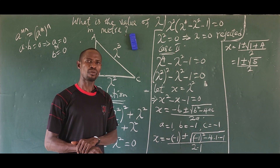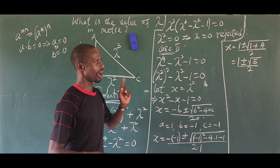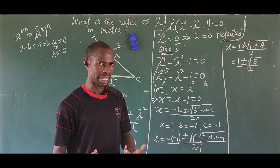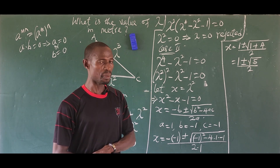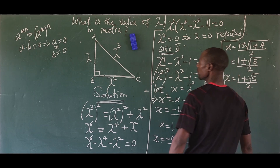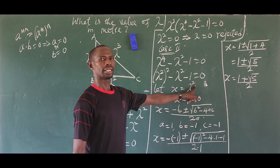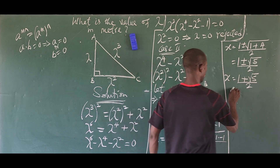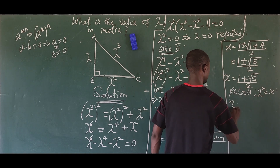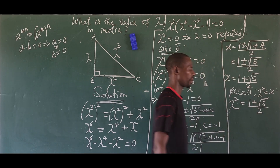The two values are: x equals one plus the square root of five, all over two — which is the golden ratio — and x equals one minus the square root of five, all over two, which gives a negative value. Since we are dealing with length, the second solution is discarded. We accept only x equals one plus the square root of five, all over two.